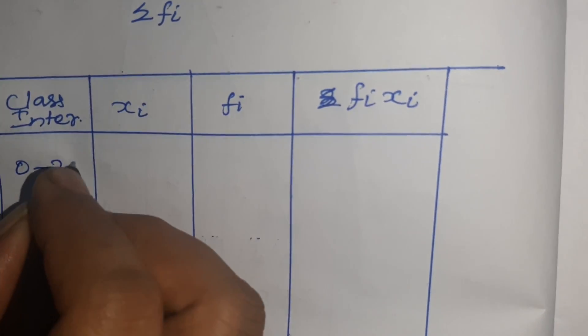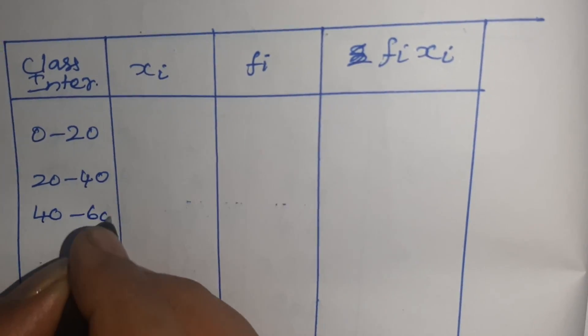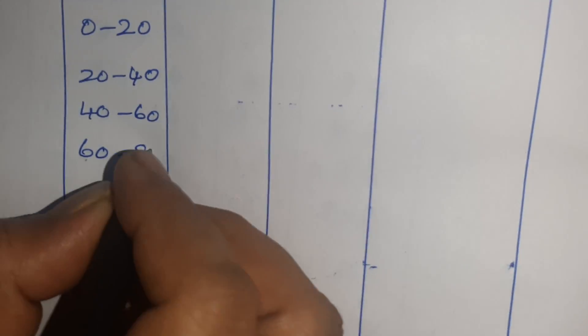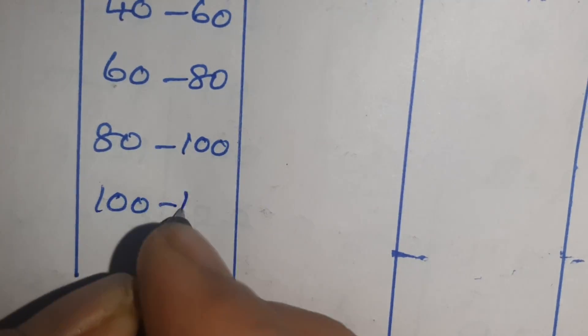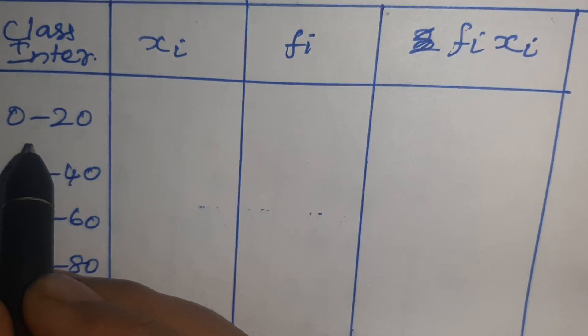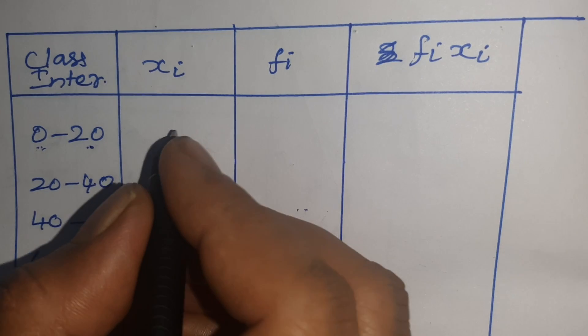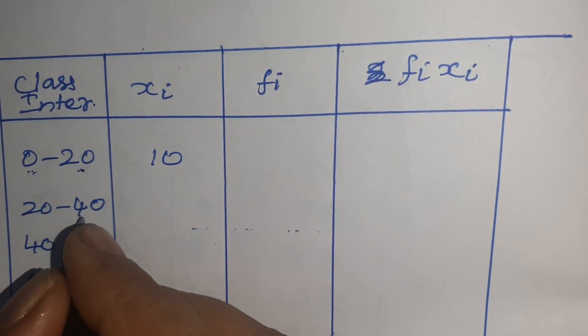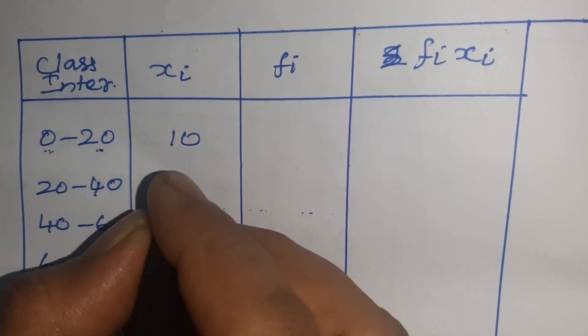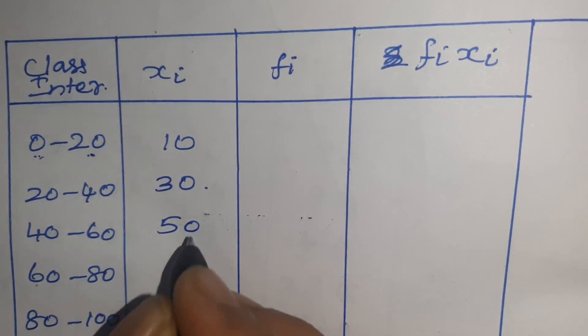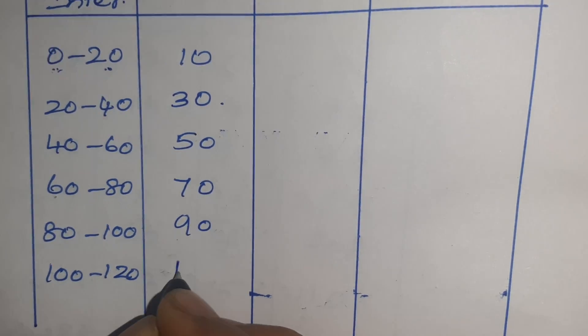First, class interval: 0 to 20, 20 to 40, 40 to 60, 60 to 80, 80 to 100, 100 to 120. Now Xi. How to find Xi? We have to add the two limits. 0 plus 20, then divided by 2 equals 10. 20 plus 40 equals 60, divided by 2 equals 30. Next ones automatically: 50, 70, 90, 110.